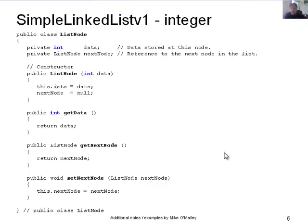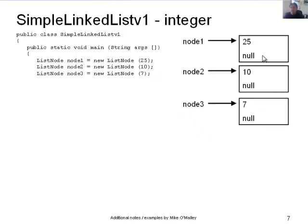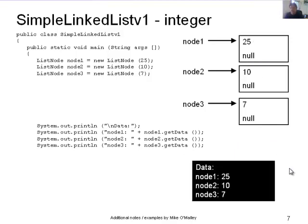We can now declare some ListNodes: node1 equals new ListNode(25), node2 equals new ListNode(10), node3 equals new ListNode(7). We've created three nodes with values 25, 10, and 7. The next node references are all null because the constructor sets nextNode to null. When we call node1.getData, node2.getData, node3.getData, we see 25, 10, and 7 — exactly what we stored.